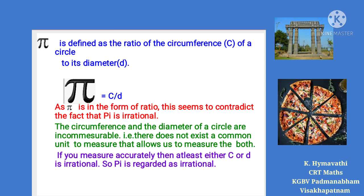Pi is defined as the ratio of the circumference of a circle to its diameter. Although pi appears as a ratio, this seems to contradict the fact that pi is irrational. The circumference and diameter of a circle are incommensurable — there is no common unit to measure both. If measured accurately, at least one of C or D is irrational, so pi is regarded as irrational.